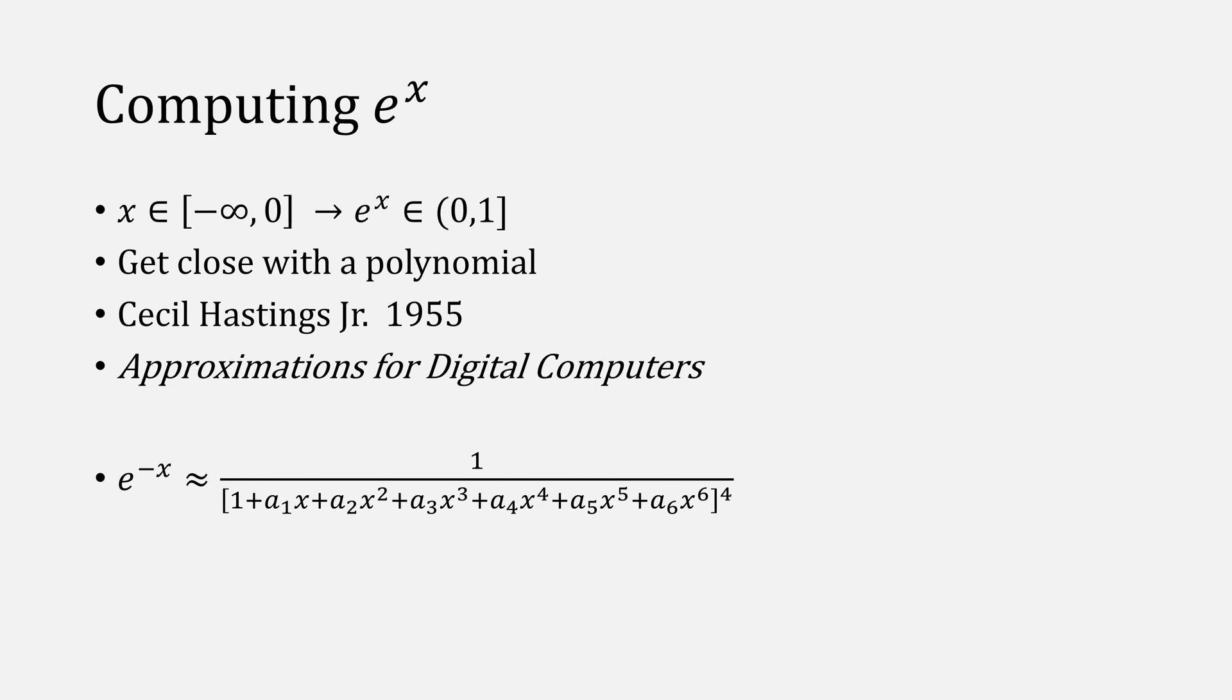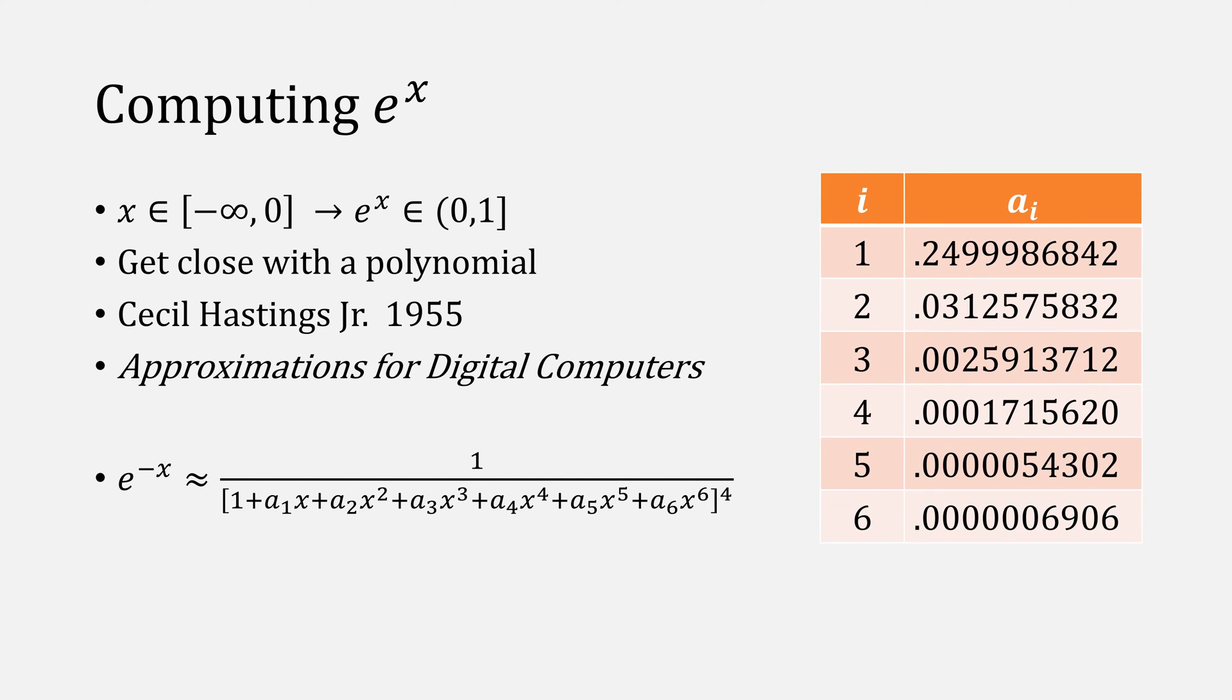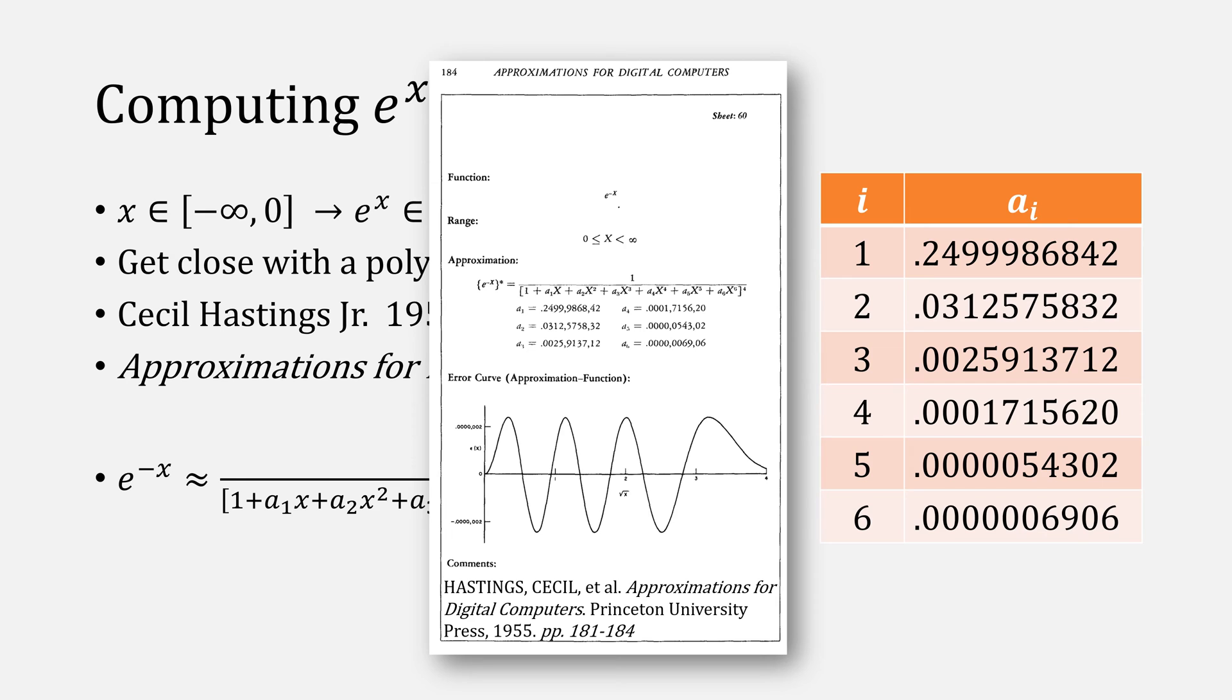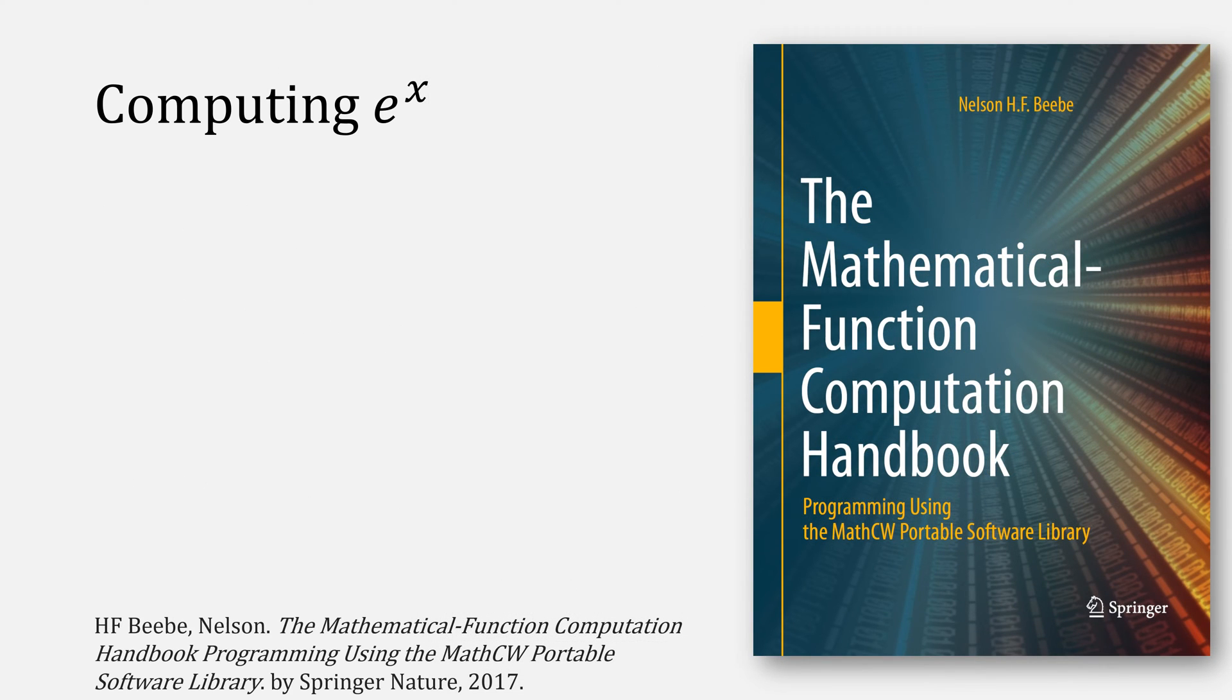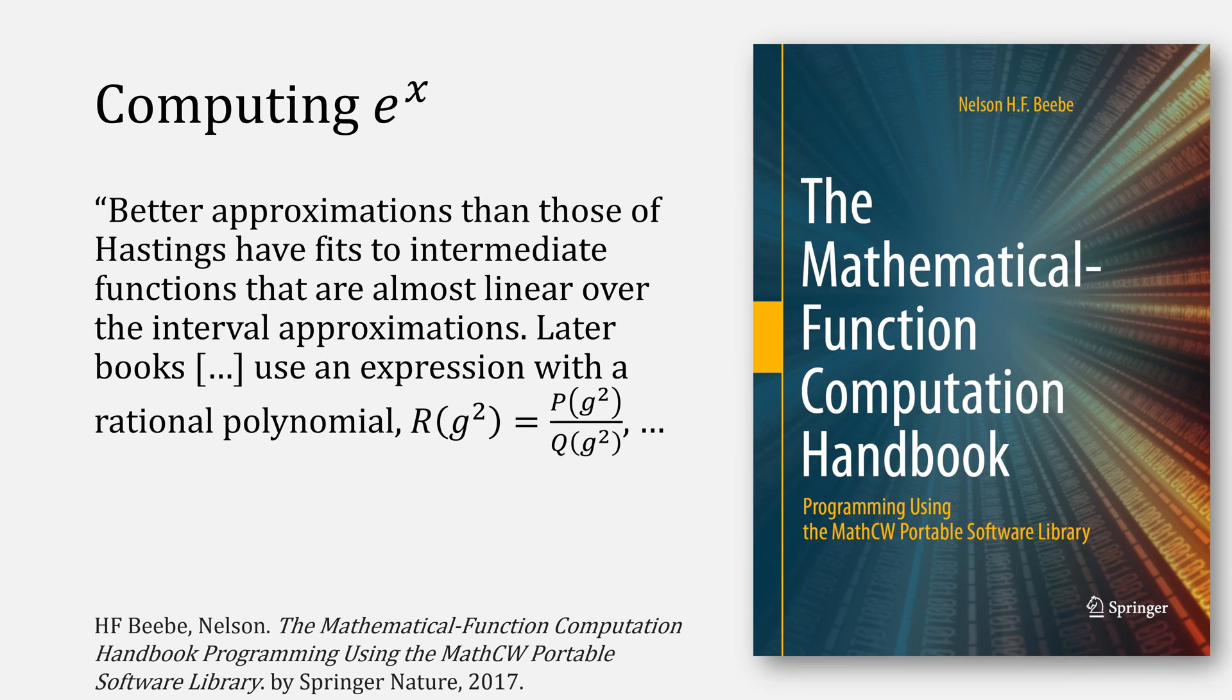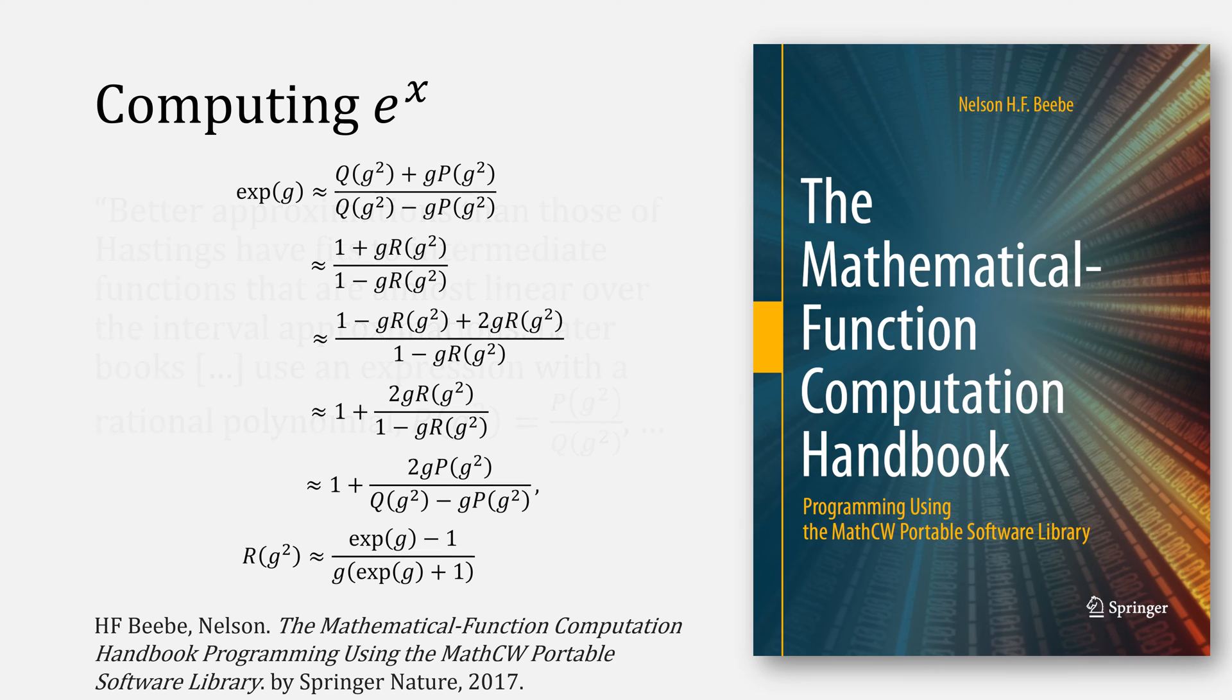He published an approximation for digital computers. It looks like this, where all of our a terms are given in this table. This is just a polynomial that you plug and chug. Here's the actual reference if you're curious. In the mathematical function computation handbook, the author explains that things have improved since Hastings using a really crazy irrational polynomial. This is what the math looks like, and I know it's a lot, but if we dig into the source code, they break it down for us.